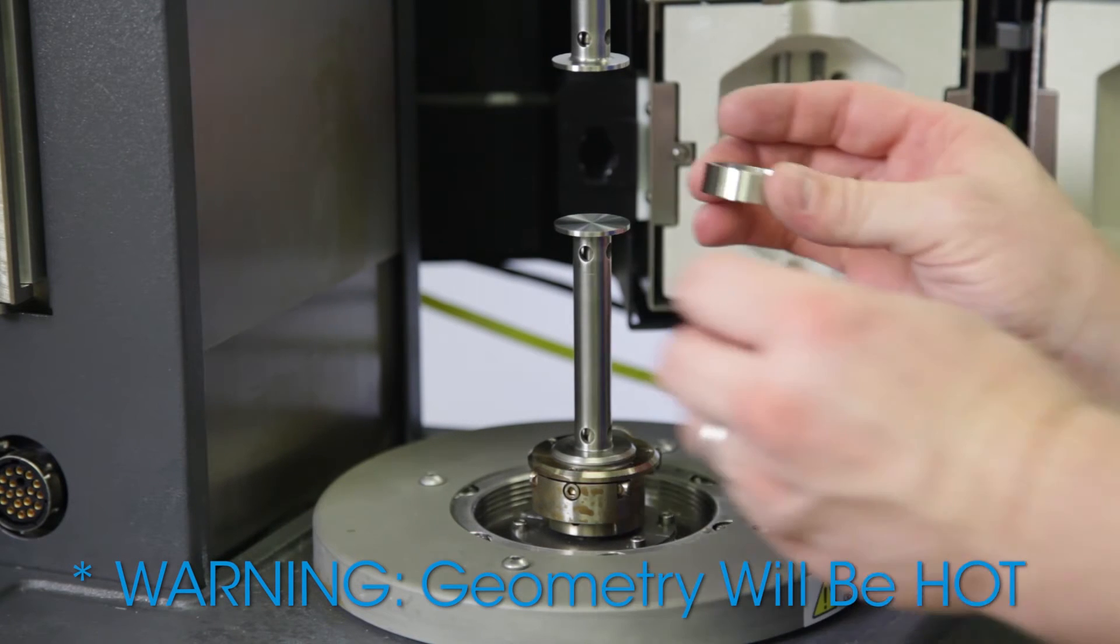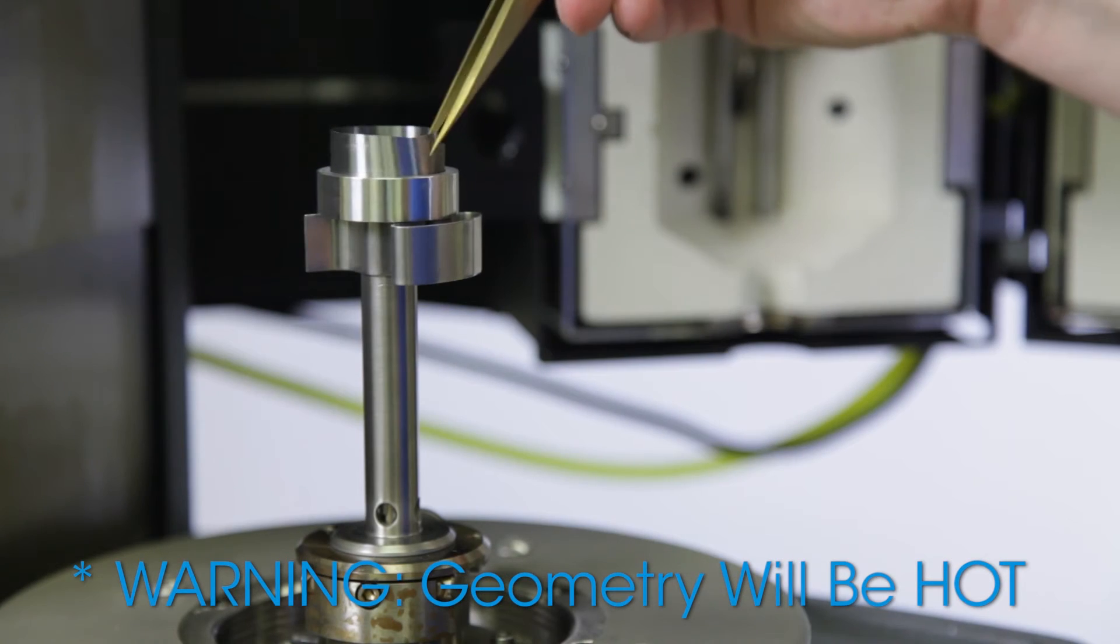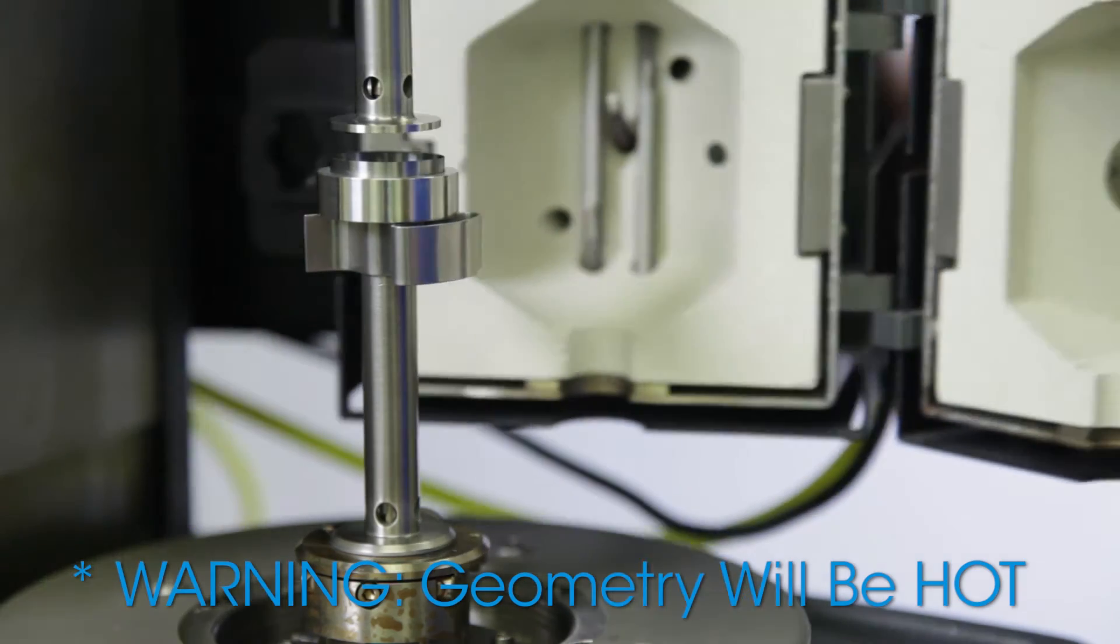When the gap is zeroed at temperature, open the furnace and mount the clip to the lower geometry. Place the ring with the metal shim inserted over the lower geometry. Again, close the furnace for a couple of minutes to allow the ring to heat up.